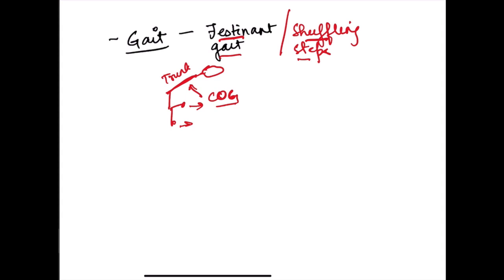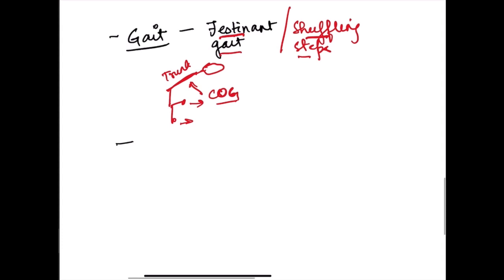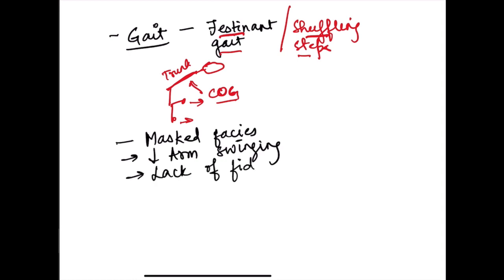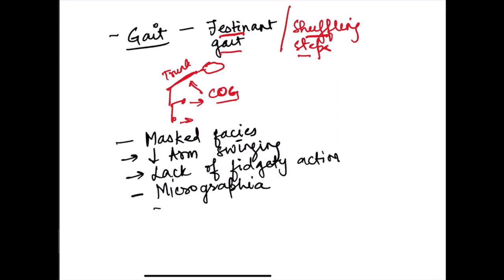Other features due to the hypokinetic disorder and akinesia include masked facies — lack of any facial expression — and decreased arm swinging. There is also a lack of fidgety actions — the small spontaneous movements we normally make while sitting. Additionally, the scaling function of the basal ganglia is affected; writing becomes very small, which is known as micrographia.